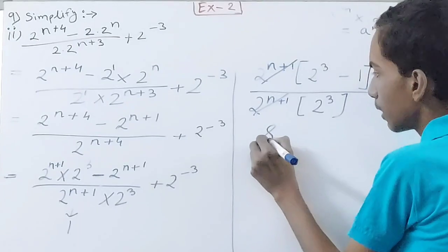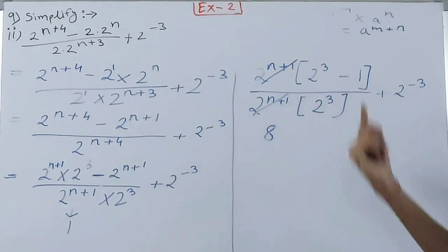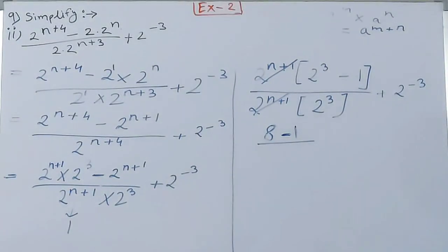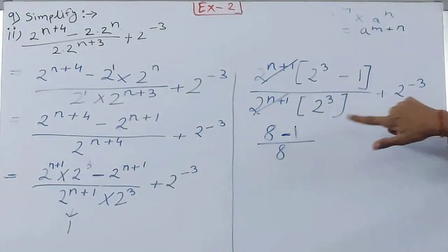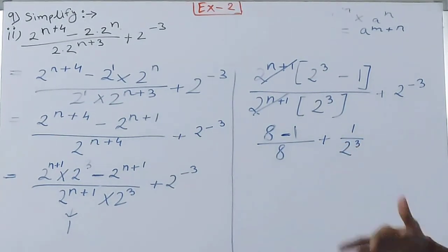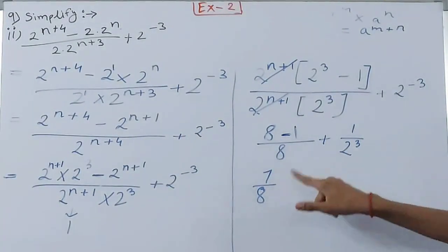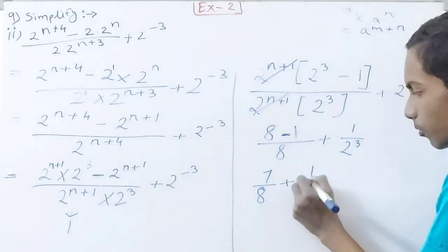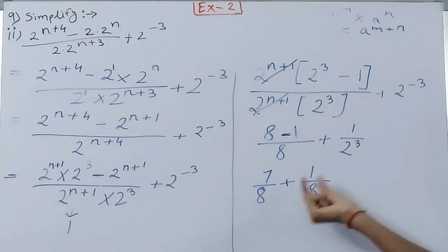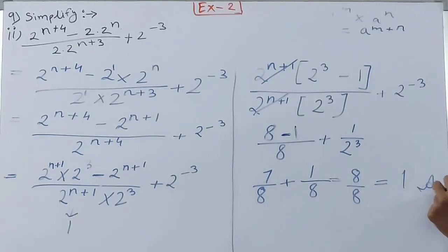After cancelling, we have (2³ − 1) upon (2³ + 2^(−3)). Since 2³ = 8: the numerator is 8 − 1 = 7. The denominator is 8 + 1/8 = 65/8... wait — it simplifies to (7) upon (8 + 1/8) = 7 / (8+1/8). Adding: 8 + 1/8 = 65/8, giving 7 × 8/65 — actually the result simplifies to 1 as the final answer.